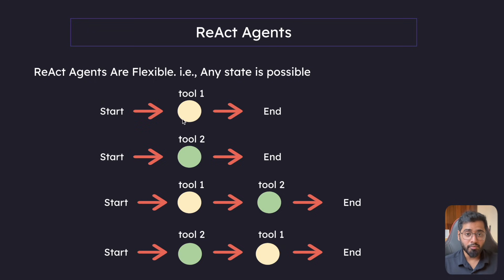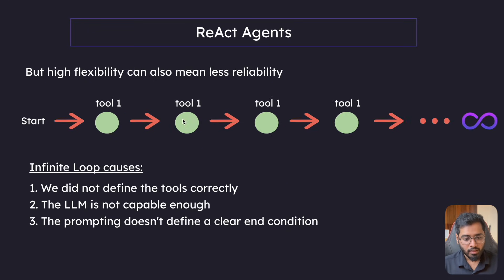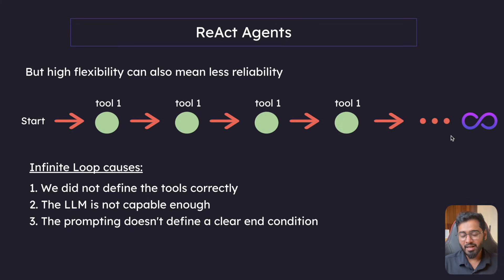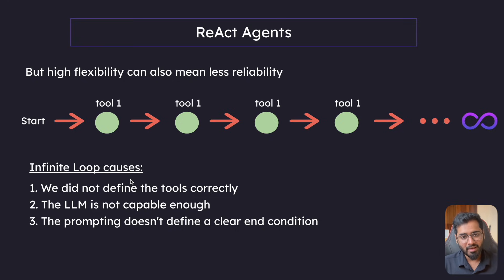React agents are very, very flexible, but high flexibility can also mean less reliability. This is an example we saw wherein tool one keeps on getting called again and again, and it goes on till infinity. Thankfully, Google Gemini stopped it right there, but infinite loops are a pretty big problem with React agents.